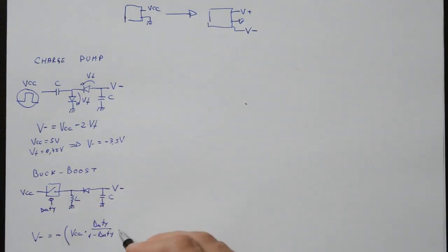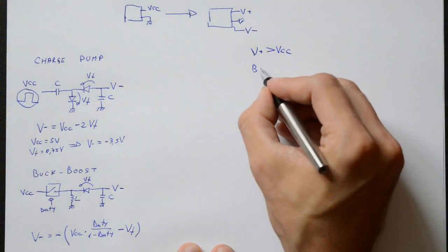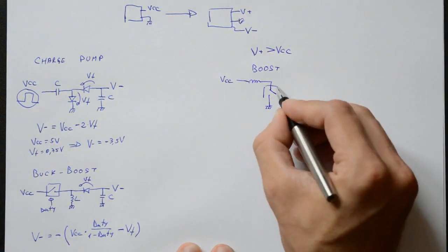But what about the positive rail? What if I want more than the input voltage? Then, I need a boost circuit. Which would look something like this.